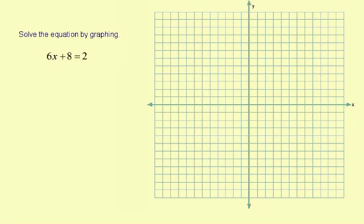Solve the equation by graphing. 6x plus 8 equals 2. So what we're going to do is turn this 6x plus 8 equals 2 into its related function and then graph that function.